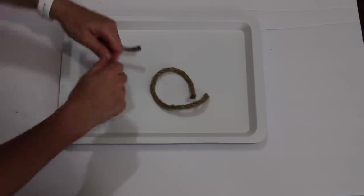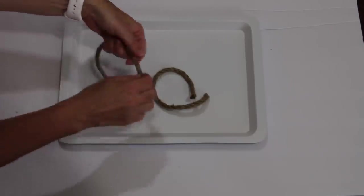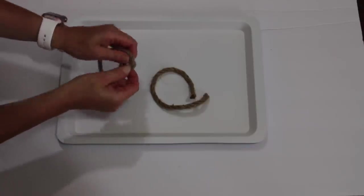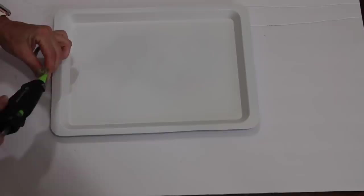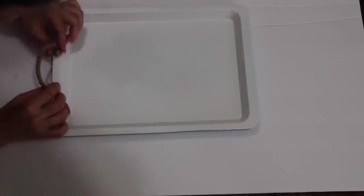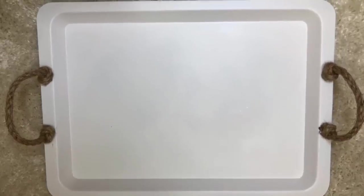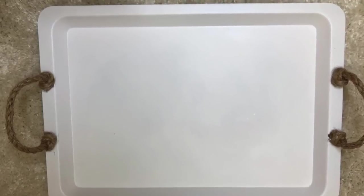I took two pieces of 12 inch rope, tied a knot on each end of the rope and hot glued the rope onto the ends of the tray in order to create little handles. Such a quick and easy way to get a really cute tray.